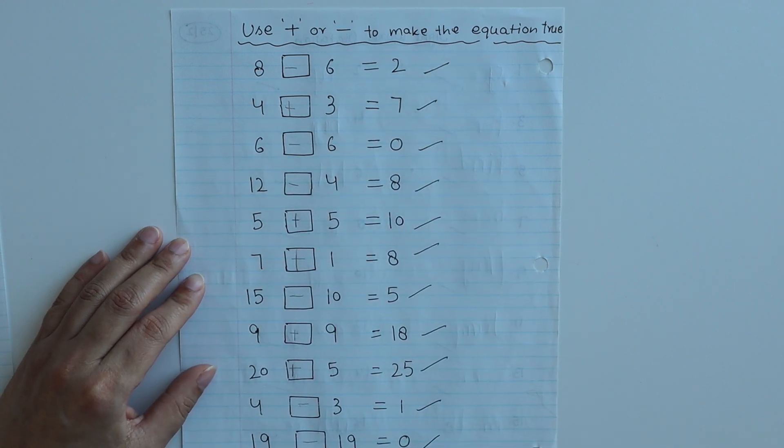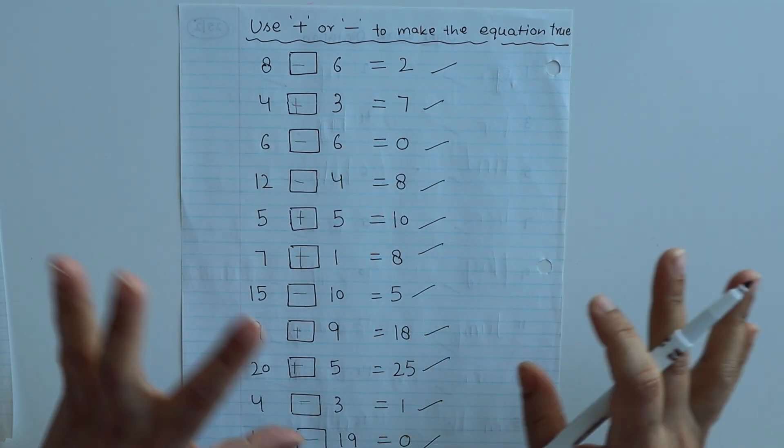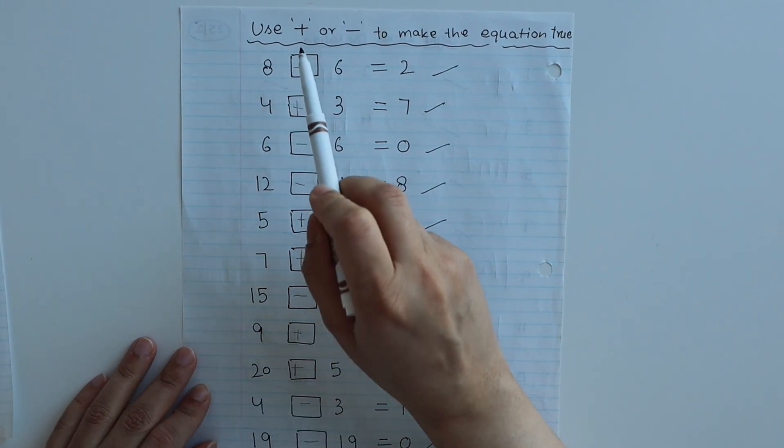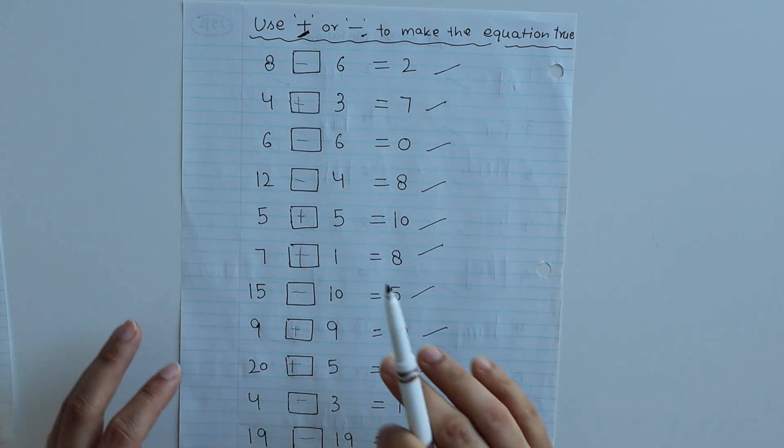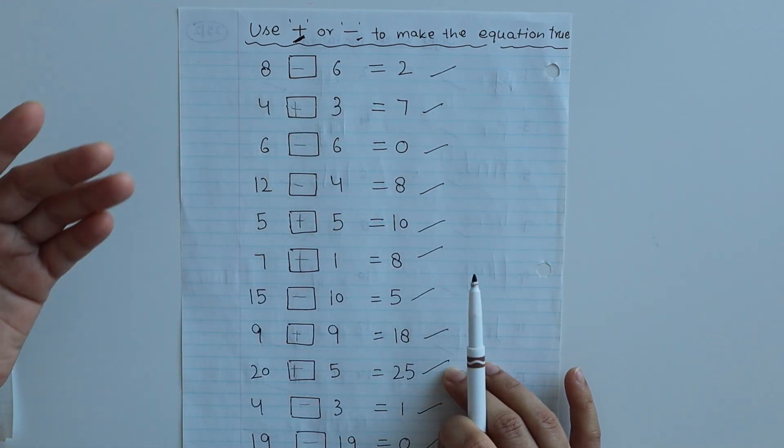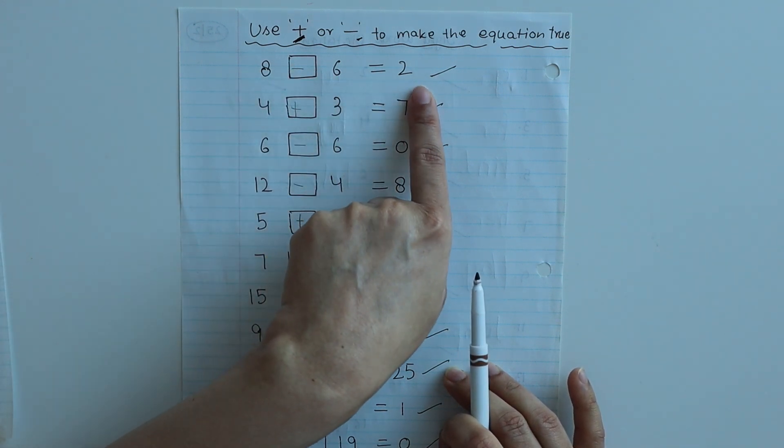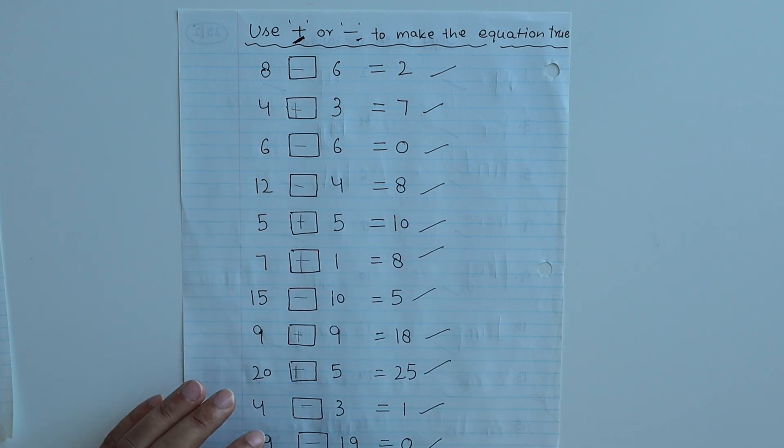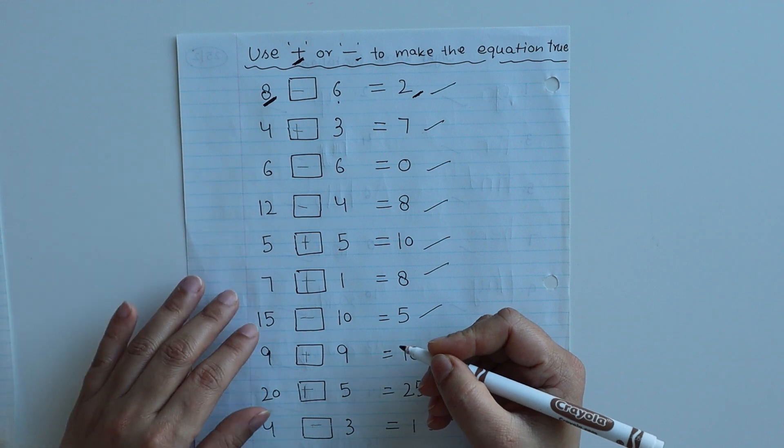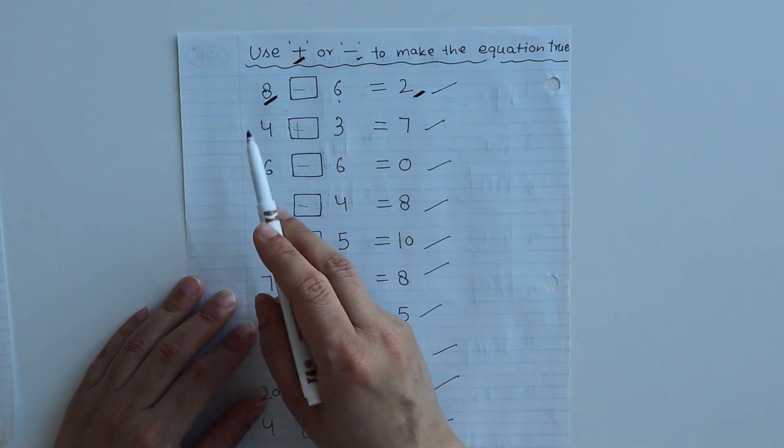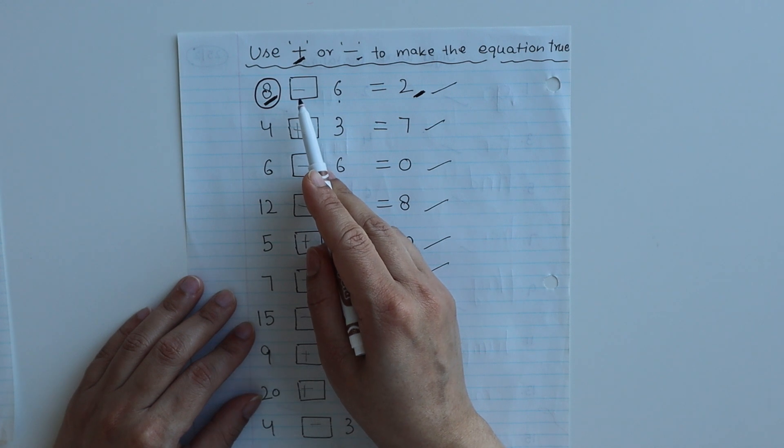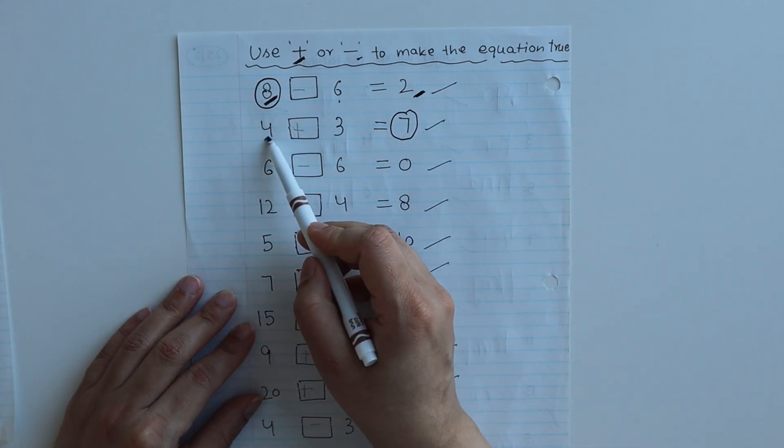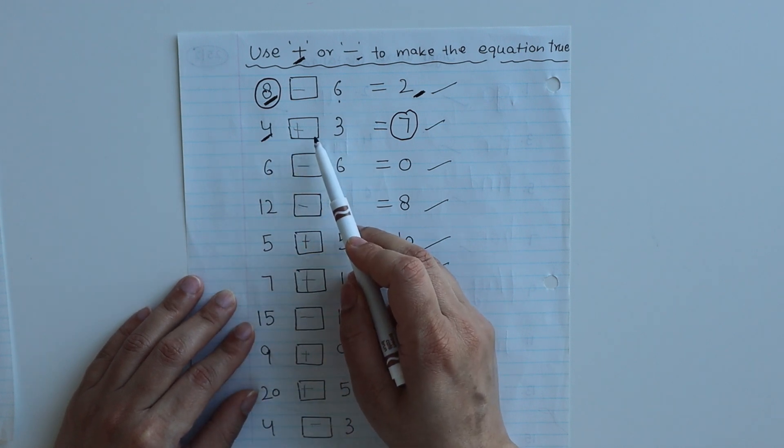The next worksheet is use plus or minus to make the equation true. I've written some simple equations with boxes. The child has to use addition or subtraction symbols. For example, 8 and 6 equals 2. If you do 8 plus 6, the answer is 14. If you do 8 minus 6, the answer is 2. A simple trick: if the answer is less than the first number, use the minus sign. If the answer is greater than the first number, use the addition or plus sign.